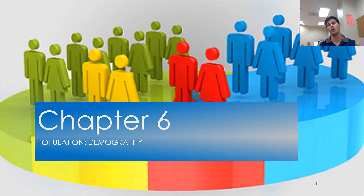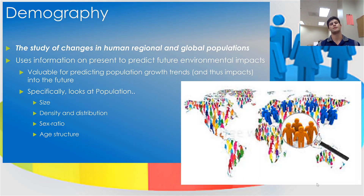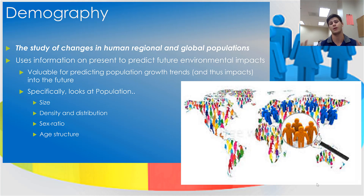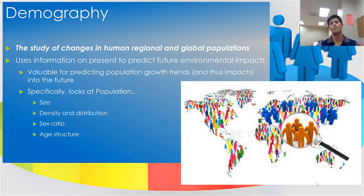Now for chapter six, we go over population dynamics, and specifically for this lecture today we'll be getting into demography. Demography refers to the study of changes in human regional and global populations. We use information on the present to predict future environmental impacts — both where people are distributed and what their environmental impacts on those areas are going to be. When looking at population and demographics, we examine population size, population density, population distribution, sex ratio, and age structure.